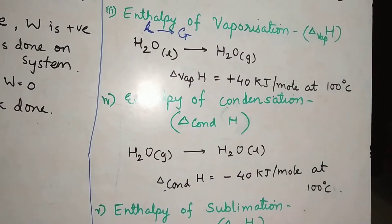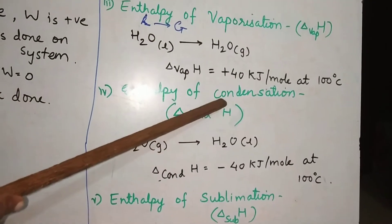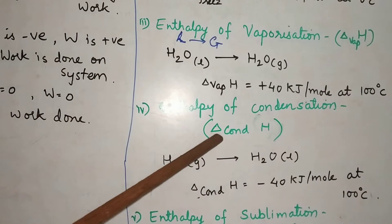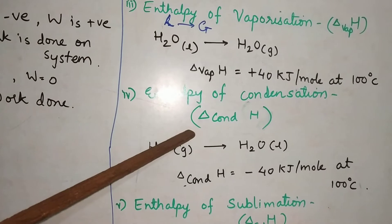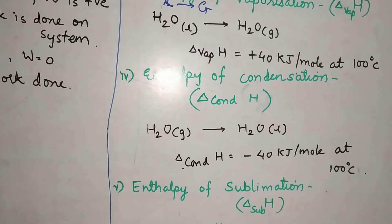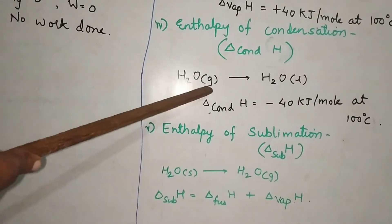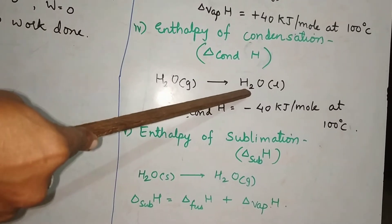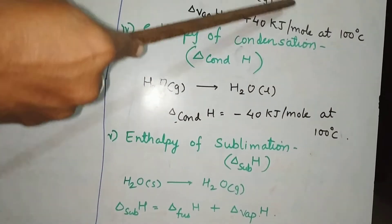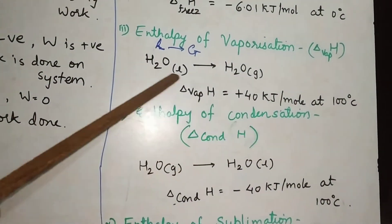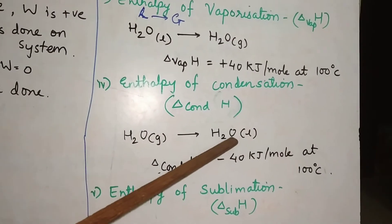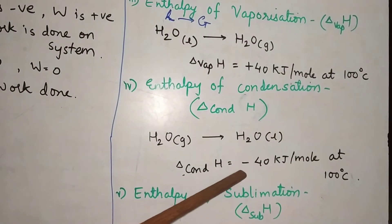The opposite process of vaporization is condensation. Vaporization is liquid becoming gas; condensation is gas converting to liquid. Enthalpy of condensation is written as delta H_cond. It is defined as the enthalpy change taking place when one mole of a gas gets converted to liquid without changing temperature and at constant pressure. For water (steam converting to liquid), the value is minus 40 kilojoules per mole. Vaporization and condensation are opposite processes with the same magnitude but opposite signs.